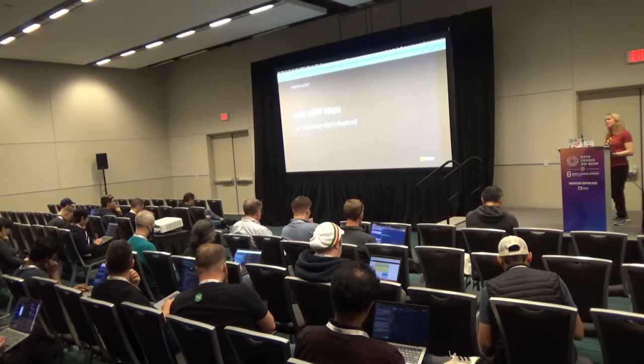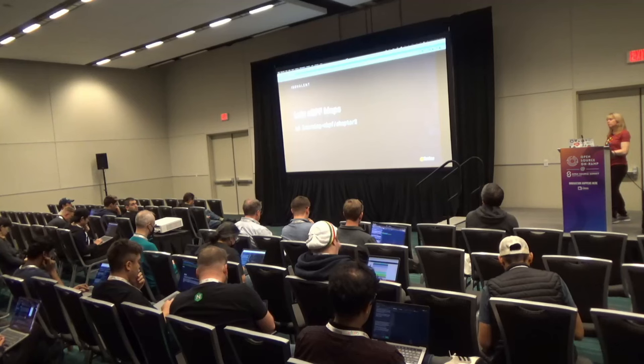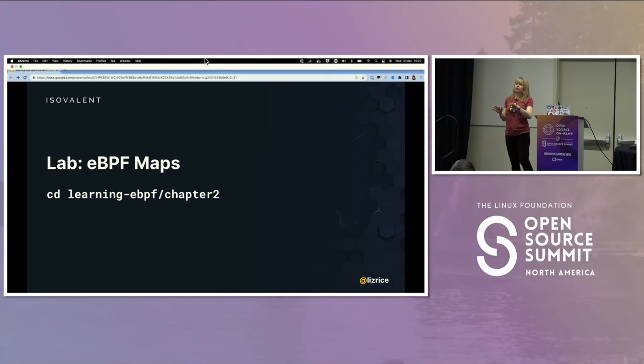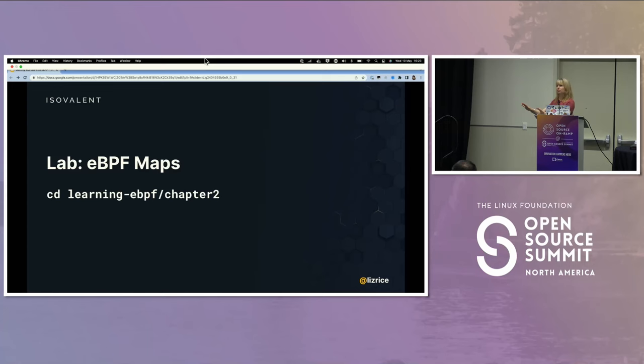Question: these programs are basically C programs as strings passed via Python — is there a reason for that? For these first couple of examples I've used a framework called BCC, which is essentially a Python library that does a lot of heavy lifting for us. It takes that C program, runs the compiler, loads the program into the kernel, and attaches it — there is some Python code to tell it to do that, but a lot of the detail is taken away from you. We'll see examples later where we'll just have the C code, compile it directly, and load it into the kernel separately.